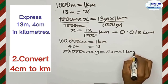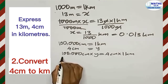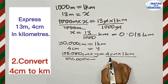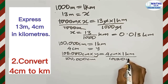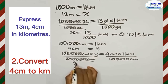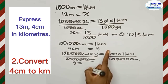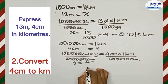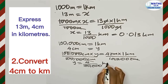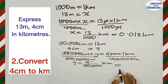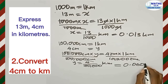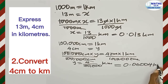So Y multiplied by a hundred thousand centimeters equals 4 centimeters multiplied by 1 kilometer. Since we're making Y the subject, we divide both sides by a hundred thousand centimeters. The hundred thousand centimeters cancels out, leaving Y equal to 4 multiplied by 1 kilometer, divided by a hundred thousand.